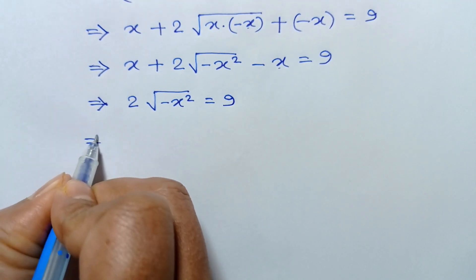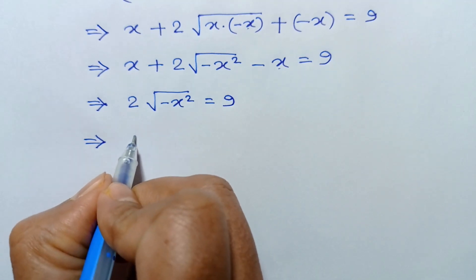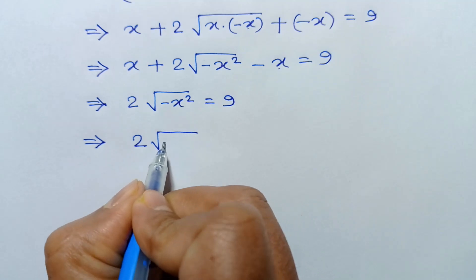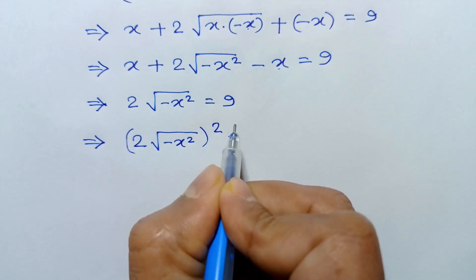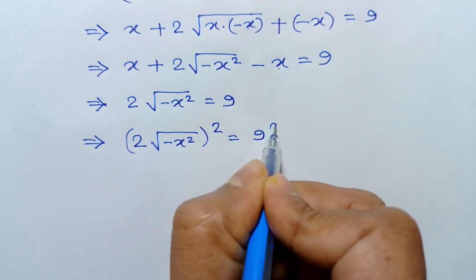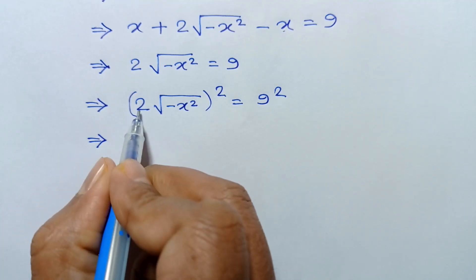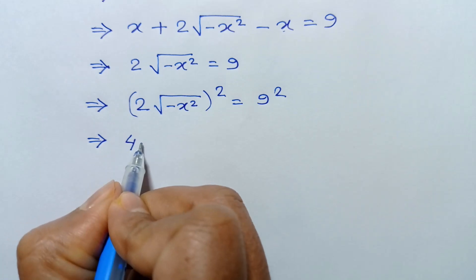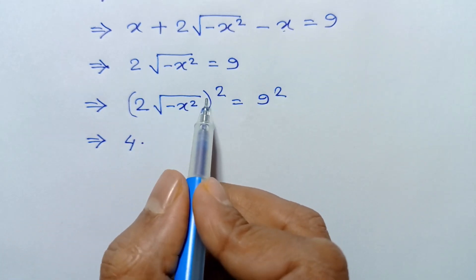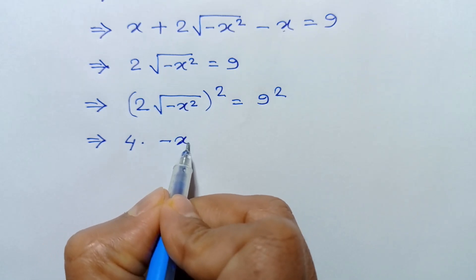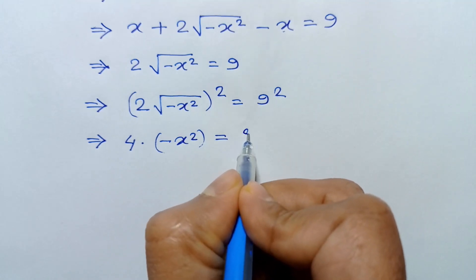Taking a square to both sides again, we can write: two times square root of negative x squared, whole squared, is equal to 9 squared. Two squared is 4, and the square root and square cancel, leaving 4 times negative x squared is equal to 81.